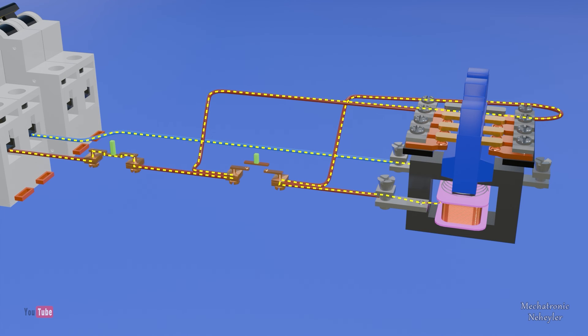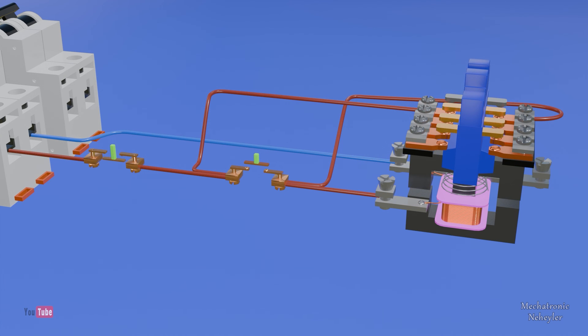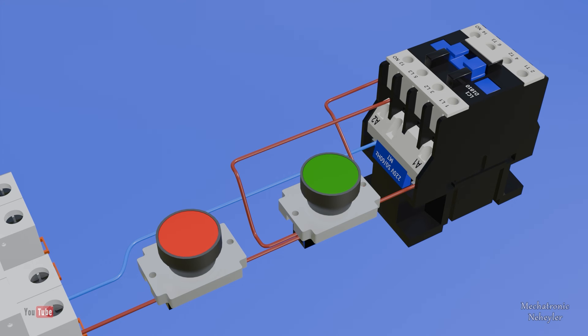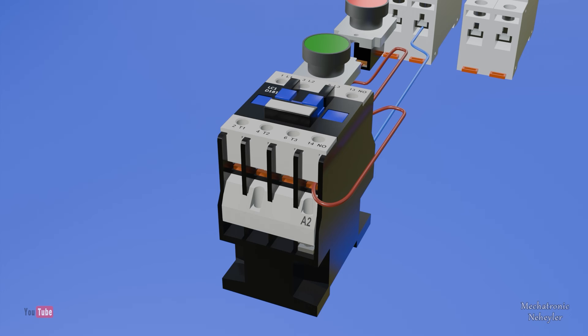If we press the stop button, it opens the circuit and the coil is de-energized and the electromagnet is lost, thus causing the contacts to open. Let's see how the contactor should be connected for self-retention. And that's it.